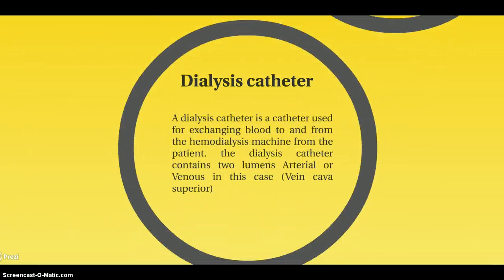Dialysis catheter. A dialysis catheter is a catheter used to exchange blood to and from the hemodialysis machine from the patient. A dialysis catheter contains two lumens — arterial and venous — in this case via the vena cava superior.